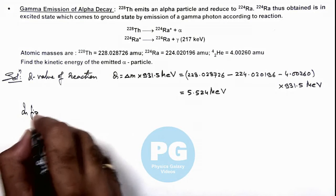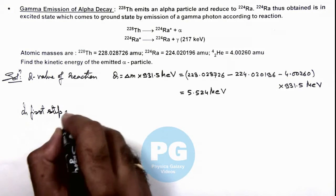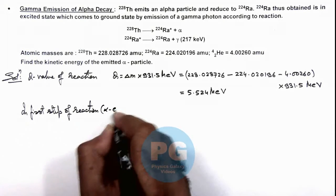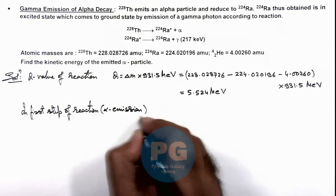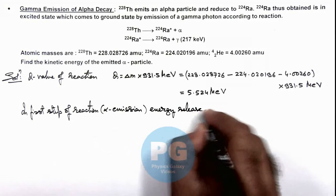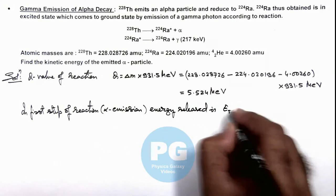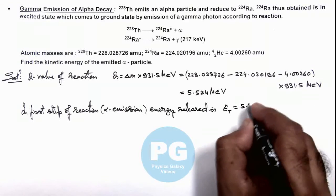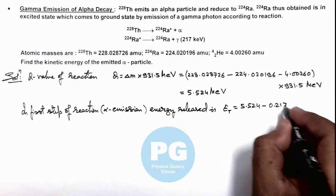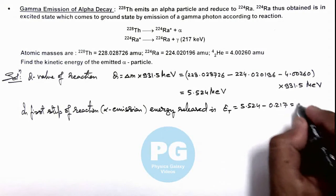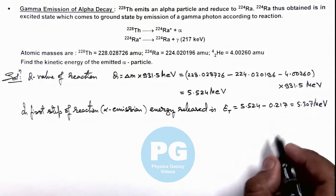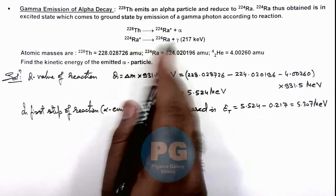So we can write, in the first step of reaction, which is basically the alpha emission, energy released is the total energy released which is 5.524 minus 0.217 million electron volts, which is equal to 5.307 MeV. This is the total amount of energy released in the first step when alpha is emitted.